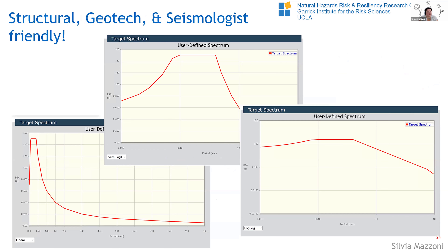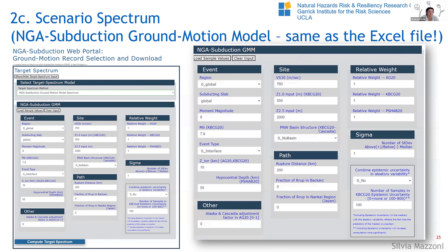I've made the plot options structural, geotechnical, and seismologist friendly. You can plot in linear, log-log, or semi-log X. You can change the plots for both the target spectrum and your records. One thing to note: sometimes the plot doesn't fully render, and if you reload the page it will plot properly — I'm working on that. It's a quirk of the open source software I'm using, independent of the format you're choosing.